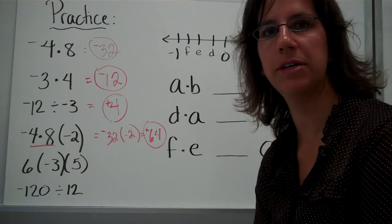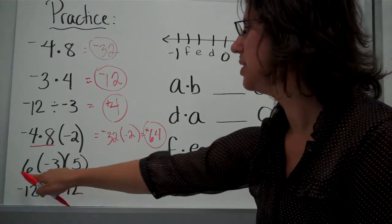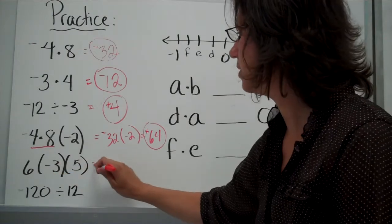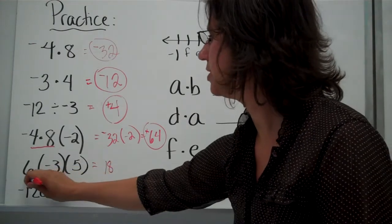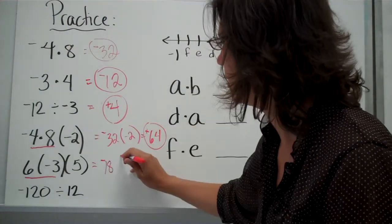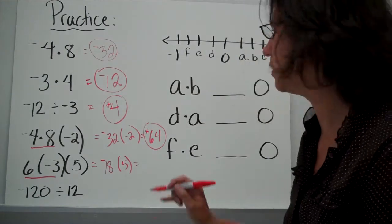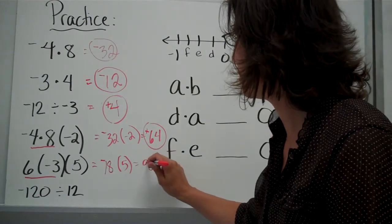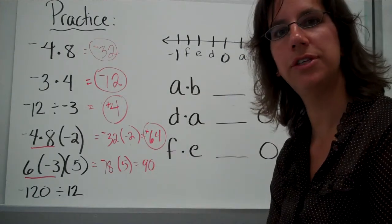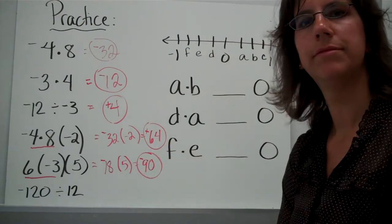Same thing goes for this one. If you need to pause the video real quick and change your answer, do so. Otherwise, I'm going to go over that. 6 times negative 3 is 18. I'm doing this first. The signs are different, so it's negative. And now I'm going to take that answer and multiply it by the 5. 18 times 5 is 90. And the signs are different, so it's negative 90.